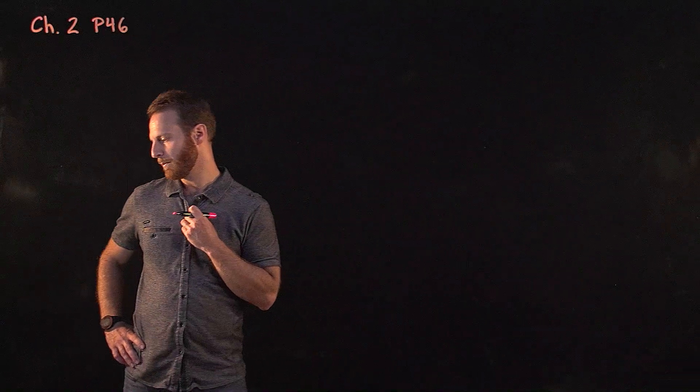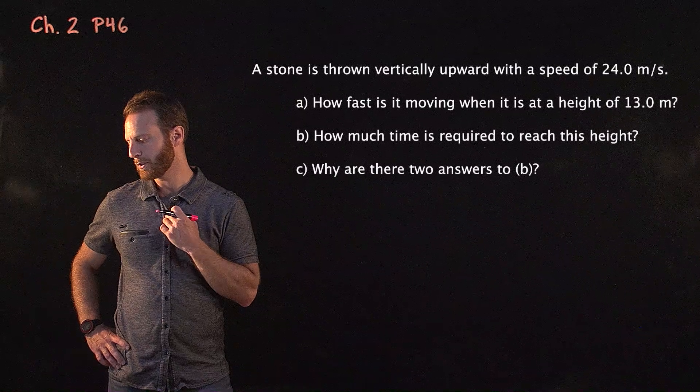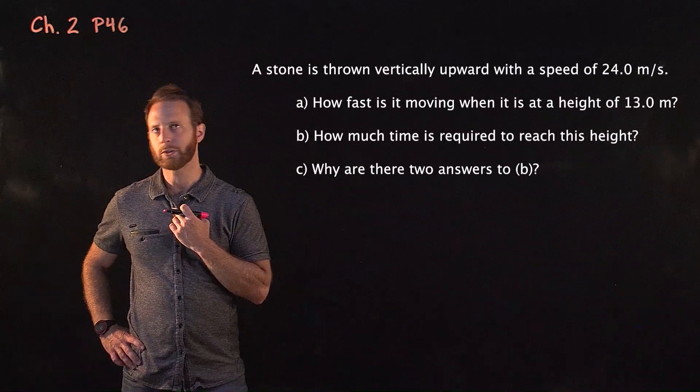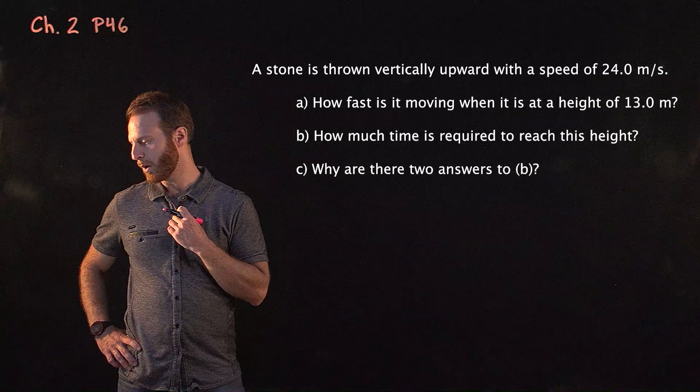So in this problem, chapter 2, problem 46, we're told a stone is thrown vertically upward with a speed of 24.0 meters per second, and there are three parts to this problem.